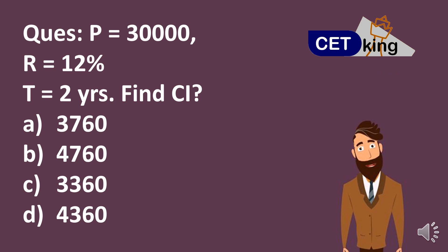So into 3, 25 into 3, 7500. 30,000 plus 7500, option A, 37,600.